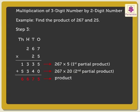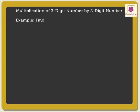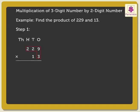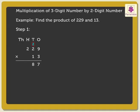Let us solve one more example. Let us find the product of 229 and 13. First, multiply 229 by the one's digit of 13, that is 3. 3 into 9 is equal to 27. 3 into 2 is equal to 6, plus the carried over 2, is equal to 8. And lastly, 3 into 2 is equal to 6. We will call 687 as the first partial product.